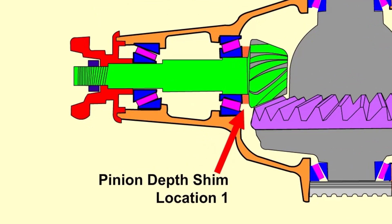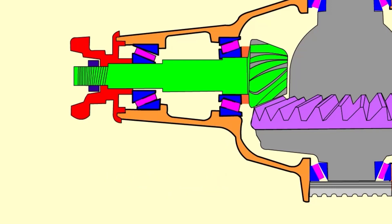The first location is between the pinion head and the rear bearing. The second location is between the rear bearing outer race and the housing.